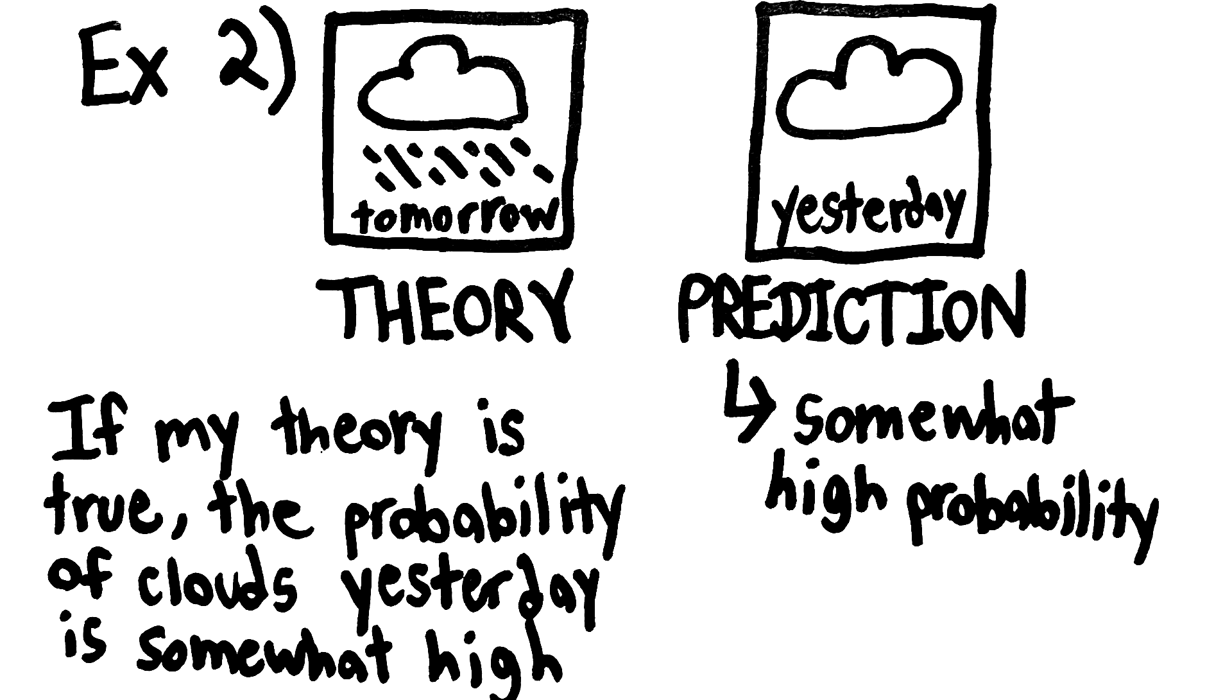So it's somewhat probable that yesterday it was cloudy. The probability of something, based on assuming your theory was true, is all we mean by prediction when talking about Bayesianism. So talking about predicting past events and stuff like that actually makes sense.